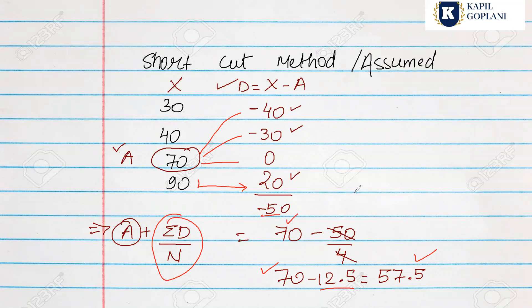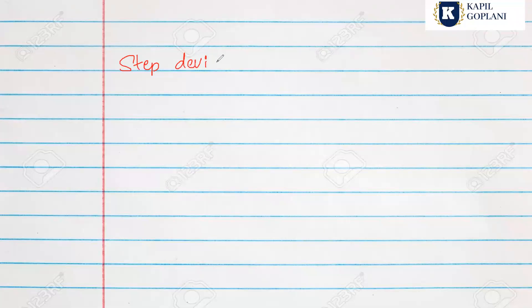You can take any assumed number from your observations and the answer will remain the same. Now let's move to the 3rd method, which is called the Step Deviation Method. We will solve the same question using step deviation. Let's take A = 40 as our assumed number this time.